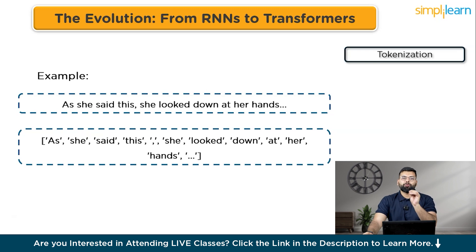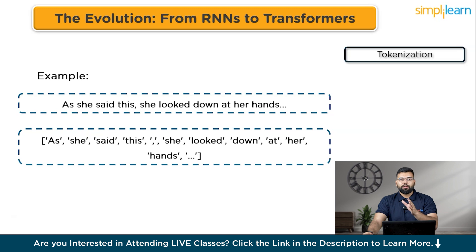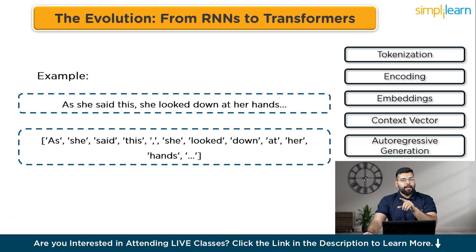These numbers are turned into vectors — multi-dimensional representations that capture the meaning of each token. For instance, the words 'she' and 'her' might have similar vectors because they often appear in similar contexts. The encoder pre-processes all these vectors together to understand the entire sentence, creating a context vector — like a summary of the meaning of the whole sentence. Finally, using the context vector, the decoder starts generating new text, predicting the next word in a sequence based on learned context.